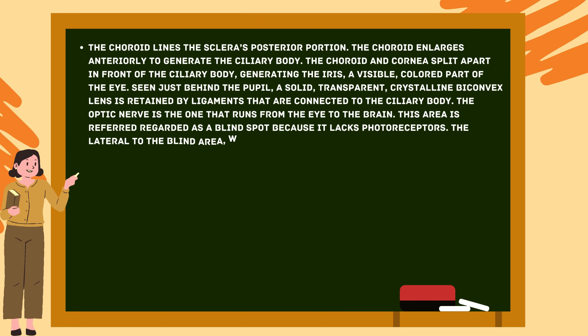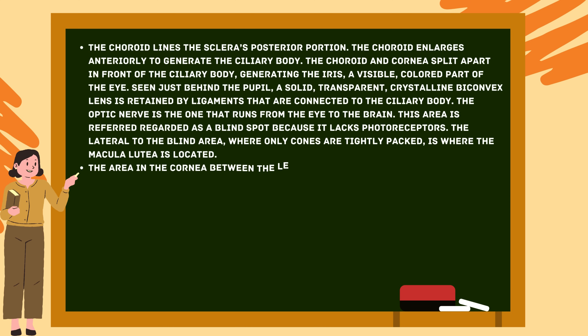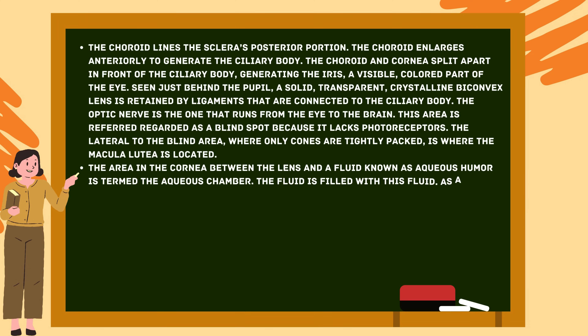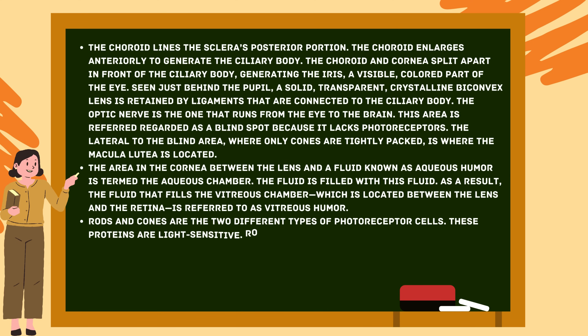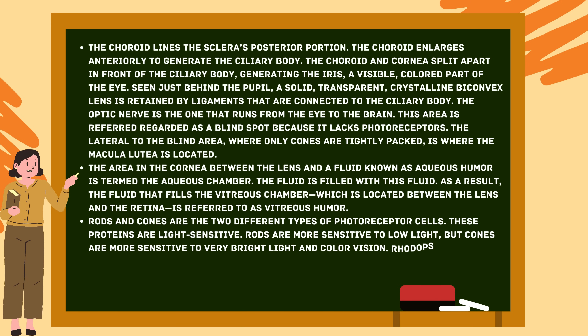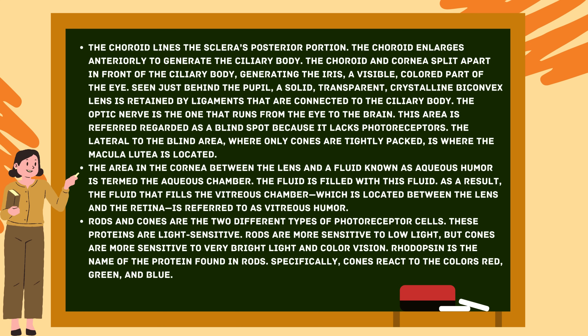The area where the optic nerve meets the retina is called the blind spot because it lacks photoreceptors. Lateral to the blind spot, where only cones are tightly packed, is the macula lutea. The aqueous chamber is the area between the cornea and the lens, filled with aqueous humor. The vitreous chamber, between the lens and the retina, is filled with vitreous humor. Rods and cones are the two types of photoreceptor cells: rods are more sensitive to low light, while cones detect bright light and color. The protein in rods is called rhodopsin; cones react to red, green, and blue.